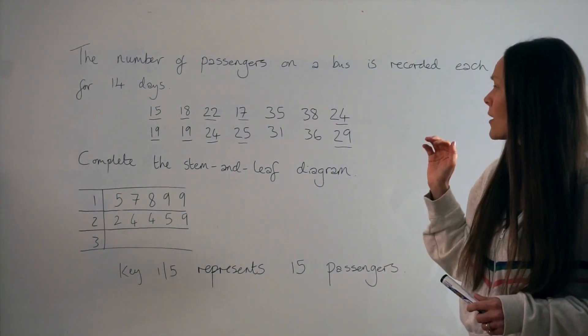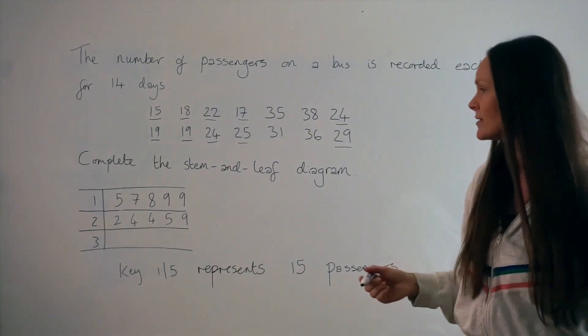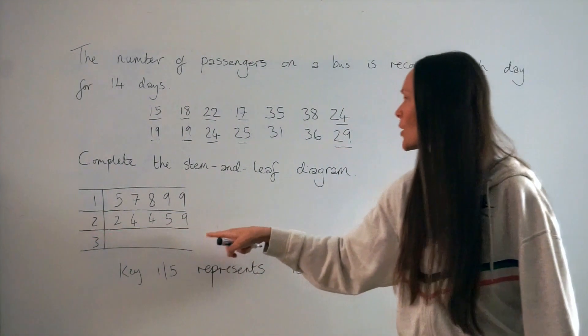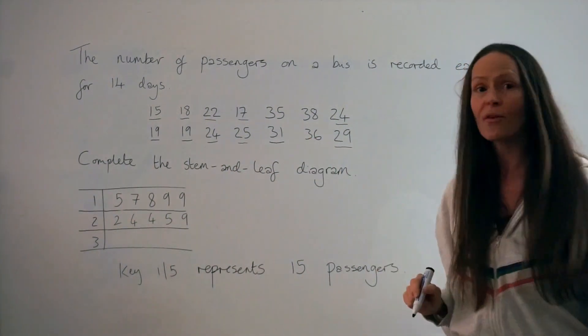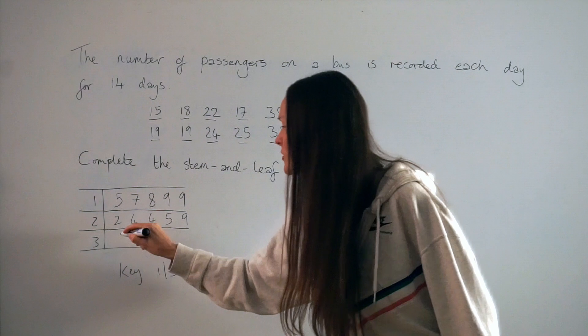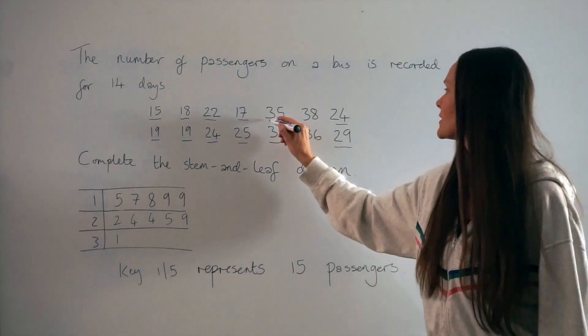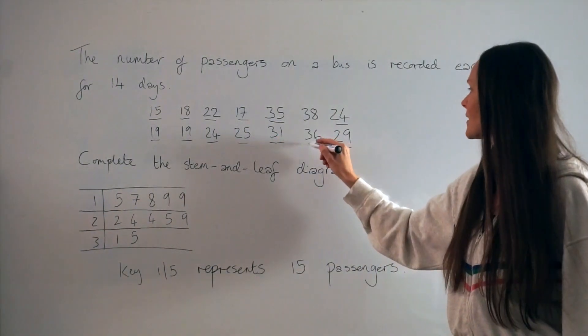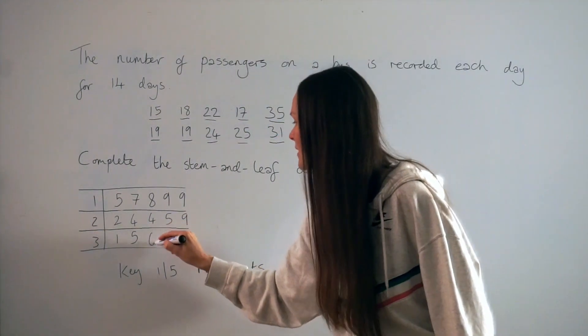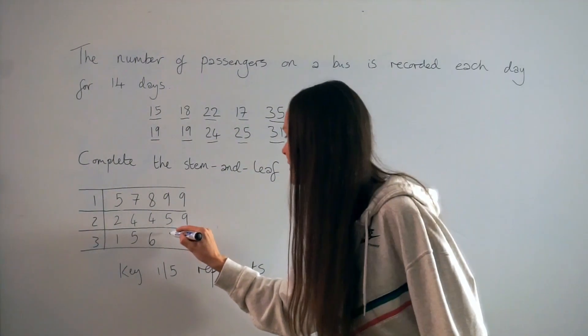Last we have all the numbers in the 30s, all the numbers starting with a 3. So they're going to go in the last row. The smallest number in the 30s is this one, so 31. So I'm going to start by writing down the number 1 there. Followed by 35, so here goes the 5. 36, here goes the 6. And the highest number, 38, so at the end goes the 8.